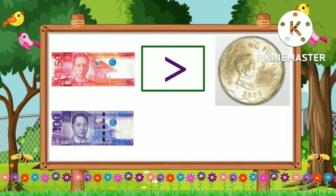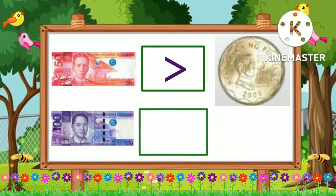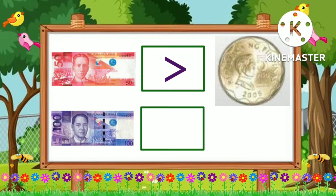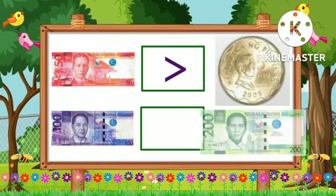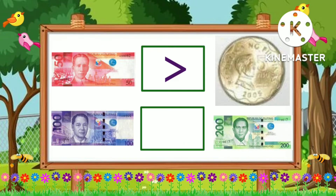The next example that I have here is 100 pesos and 200 pesos. The symbol that we're going to use here is less than. 100 pesos is less than 200 pesos.